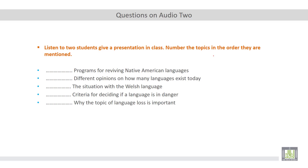Okay. As you can see here, we have five different topics. Number one, programs for reviving Native American languages. Two, different opinions on how many languages exist today. Three, the situation with the Welsh language. Four, criteria for deciding if a language is in danger. And the last one, why the topic of language loss is important.